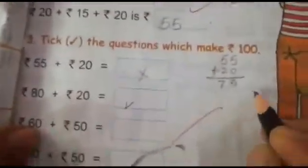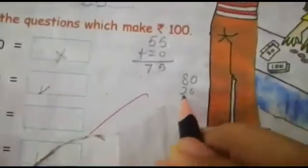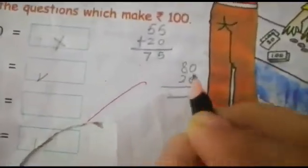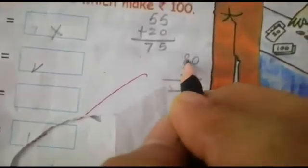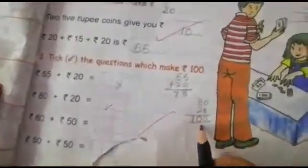Next: 80 rupees plus 20 rupees. We add them: 8 and 2 is 10, so that is 100 rupees. Yes! We will put a tick.